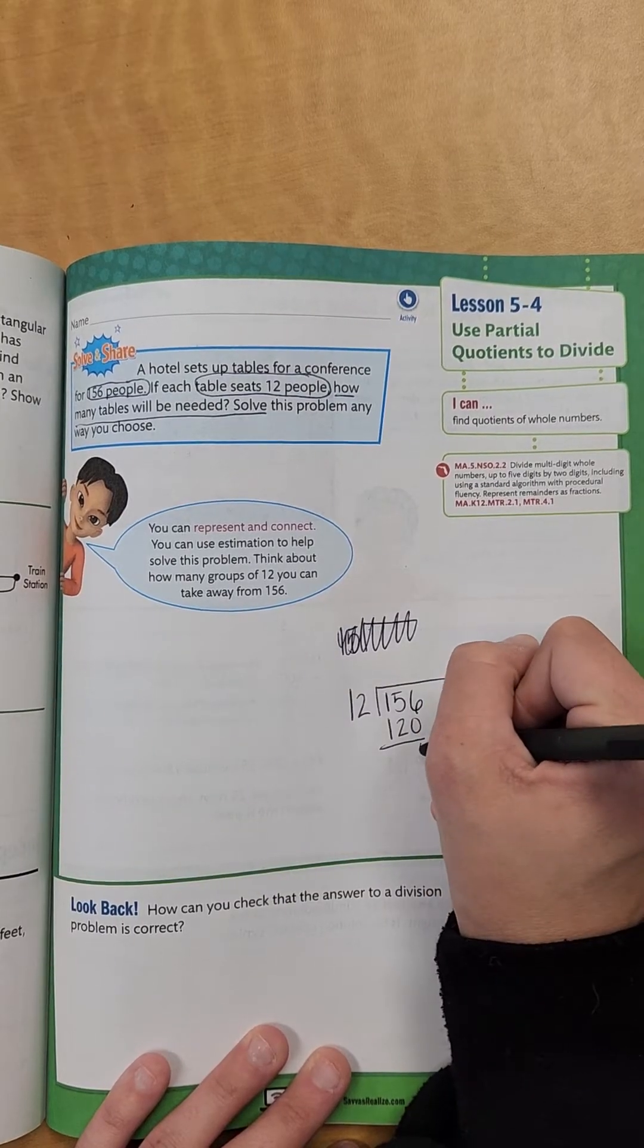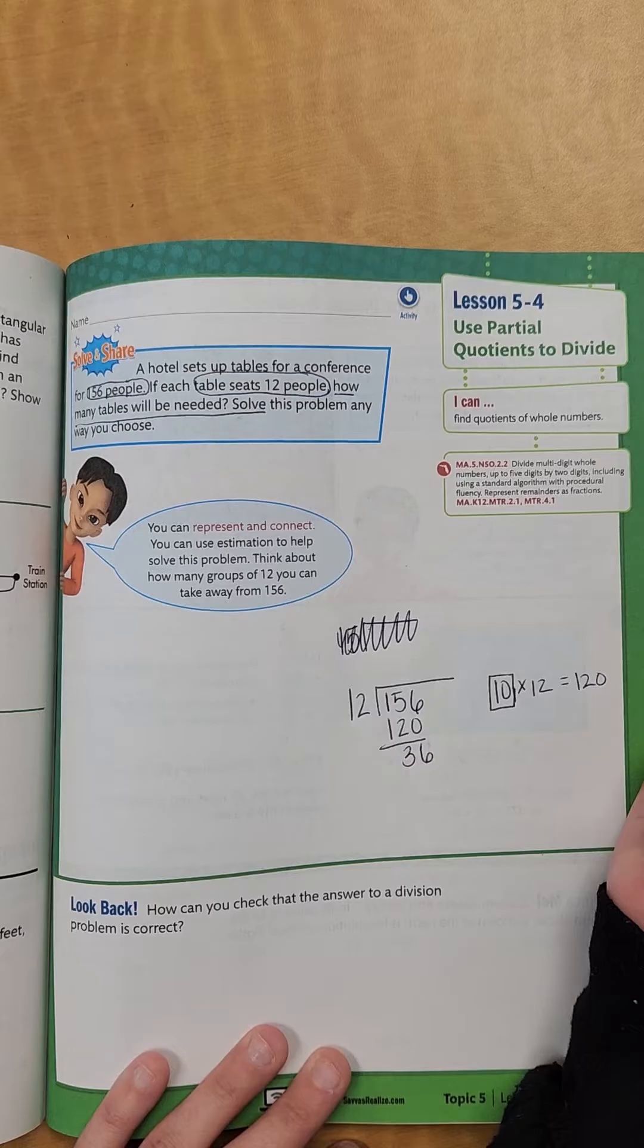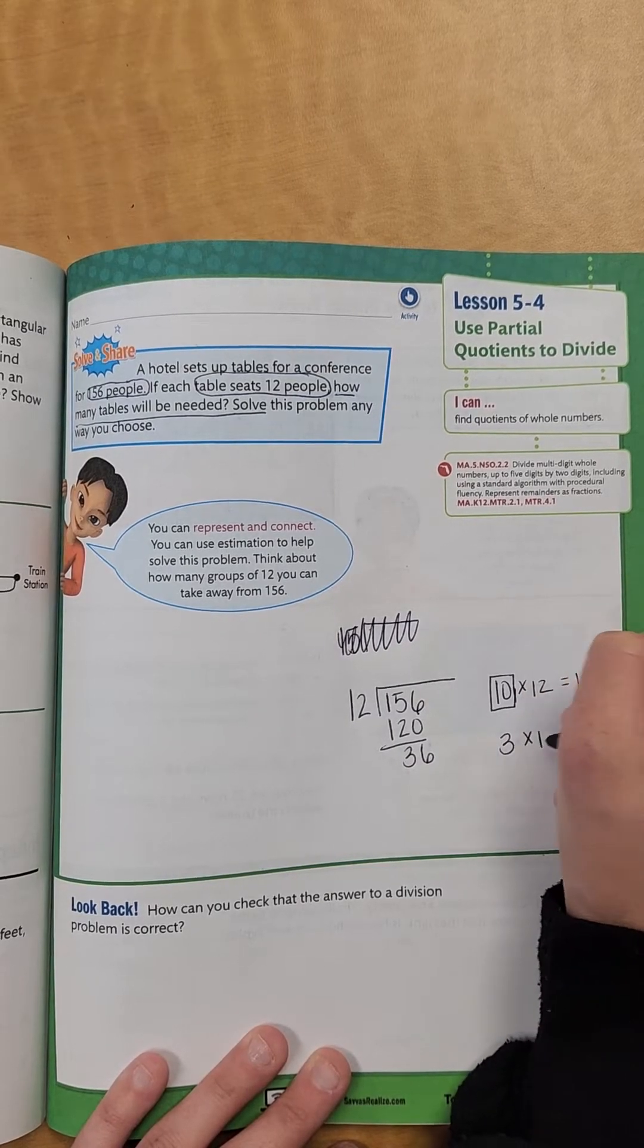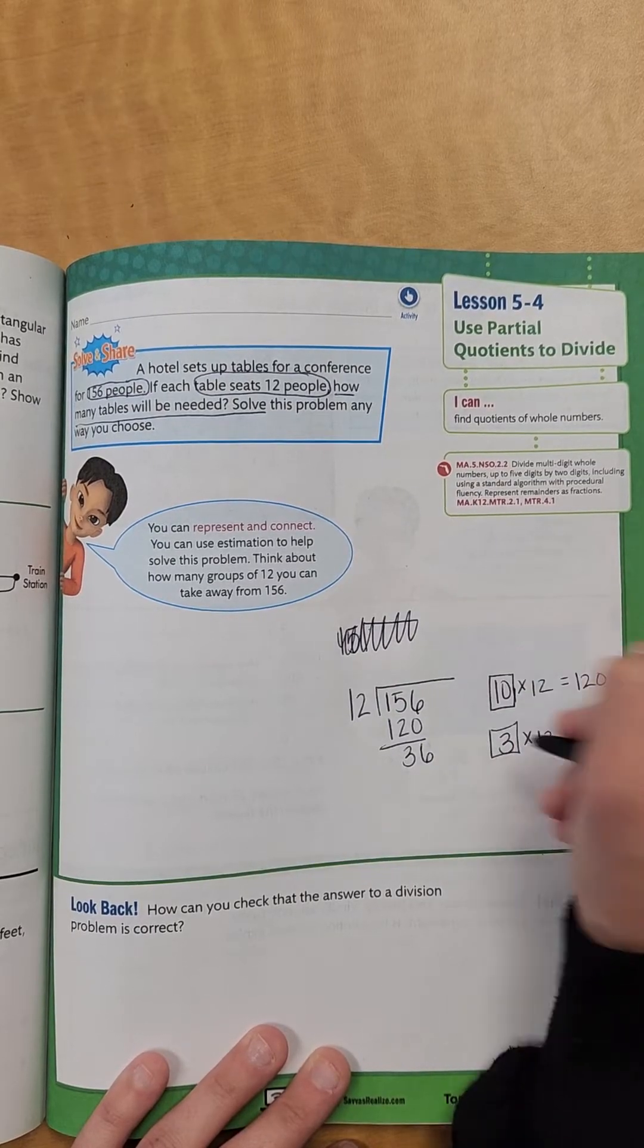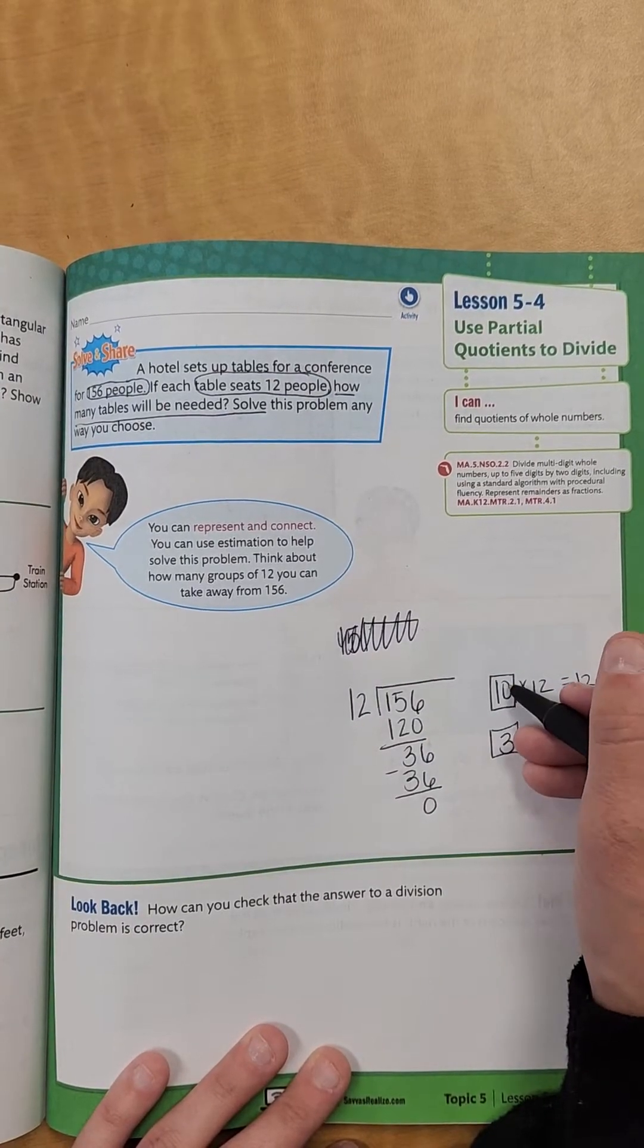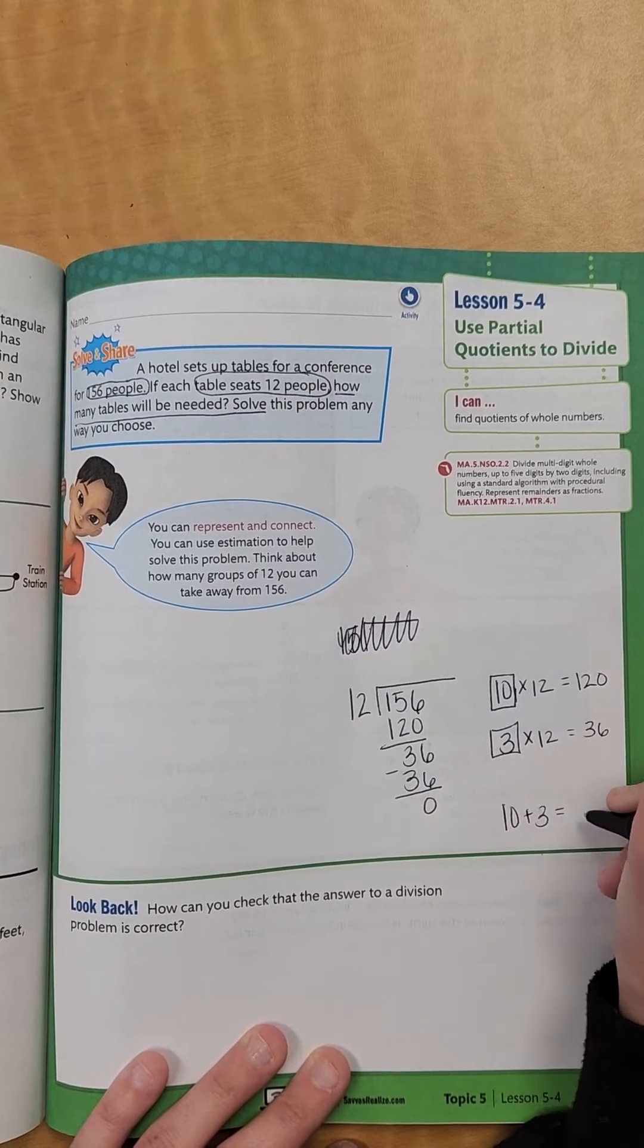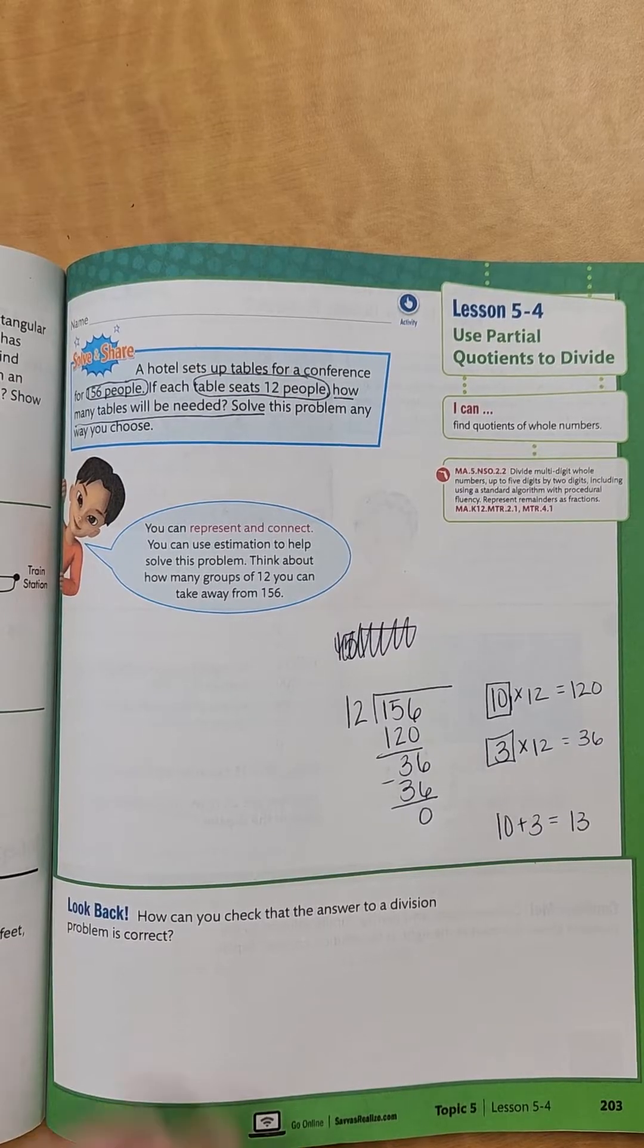Now if I subtract it, I'm left with 6 and 3. Now 12 will go into 36, I know that fact off the top of my head, that's 3. So 3 times 12 equals 36, and I know if I subtract that, I'm left with 0. So then I would add up my partial quotients, 10 plus 3 equals 13. And that's all you have to do.